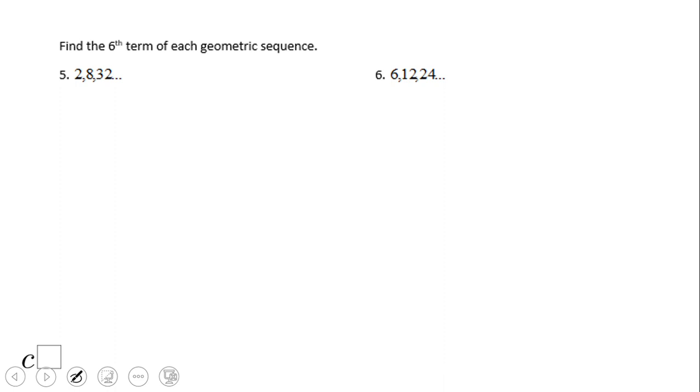Now in these two problems, we're going to look for finding a specific term. So if you remember, we have a formula: Bn equals B1 times R to the N minus one power. So that's the one we're going to use here for this geometric sequence, which is generated by multiplying by four.